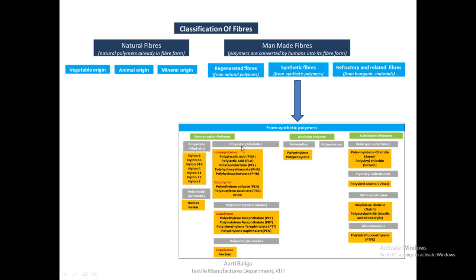Under condensation polymers there are two types: polyamide and polyester. Aliphatic polyamide examples include nylon 6, nylon 6,6, nylon 6,10, nylon 4, nylon 11, nylon 12, and nylon 7. Aromatic examples include Nomex and Kevlar. Under polyester aliphatic homopolymers: polyglycolic acid (PGA), polylactic acid (PLA), polycaprolactone (PCL), polyhydroxyalkanoate (PHA), and polyhydroxybutyrate (PHB). Co-polymers include polyethylene adipate (PEA), polybutylene succinate (PBS), and PHBV.